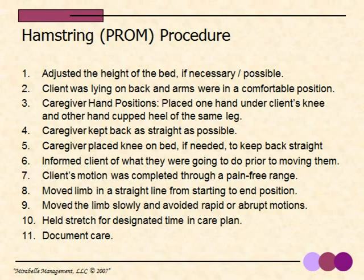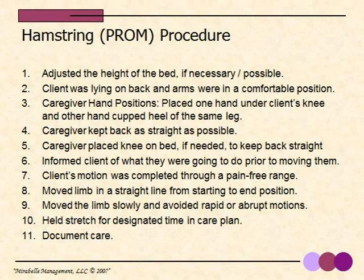Let's review the hamstring procedure. One: adjust the height of the bed if necessary. Two: client lying on their back, arms in a comfortable position. Three: caregiver hand positions — one hand under the client's knee, the other cupping the heel of the same leg. Four: caregiver kept back as straight as possible. Five: caregiver placed knee on bed if needed. Six: inform the client prior to moving them. Seven: motion completed through a pain-free range. Eight: move the limb in a straight line. Nine: move slowly, avoid rapid motions. Ten: hold for the designated time. Eleven: document the care.